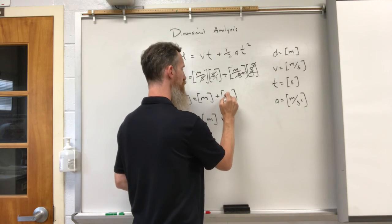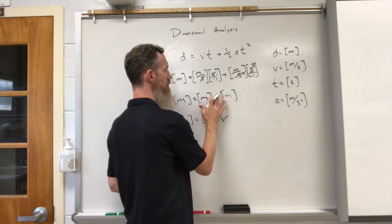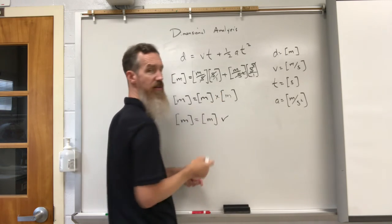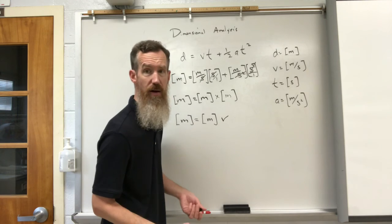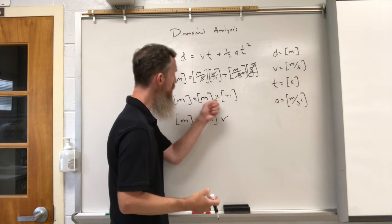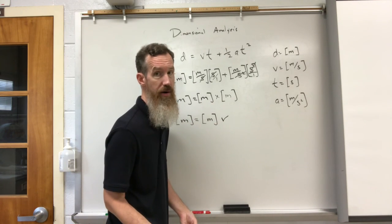Or if for whatever reason we had meters times meters, if the problem were changed, this would end up being meters squared. And meters would not equal meters squared, then it would not work out.